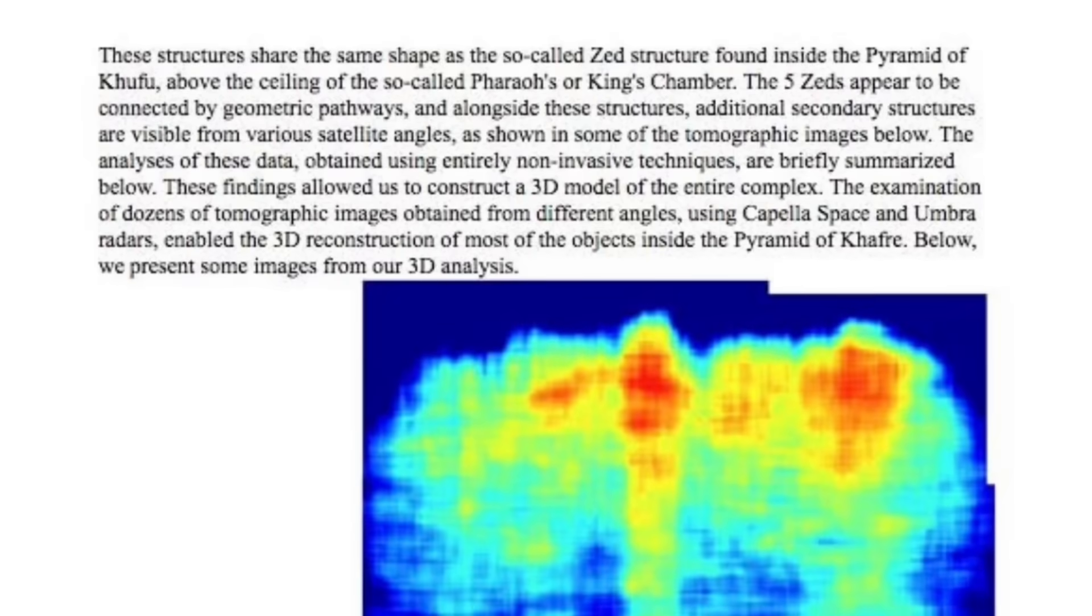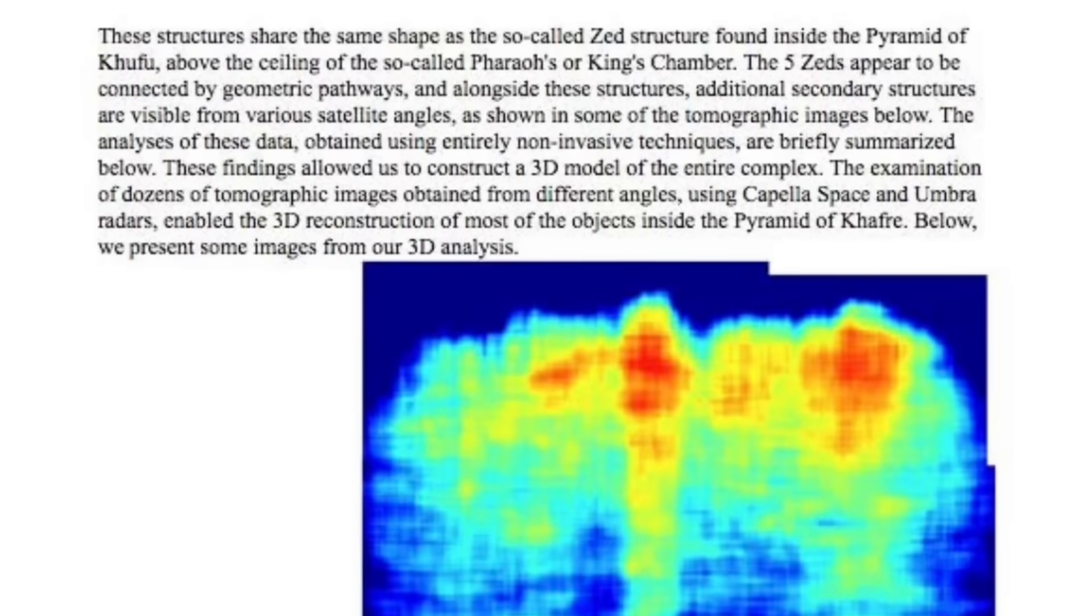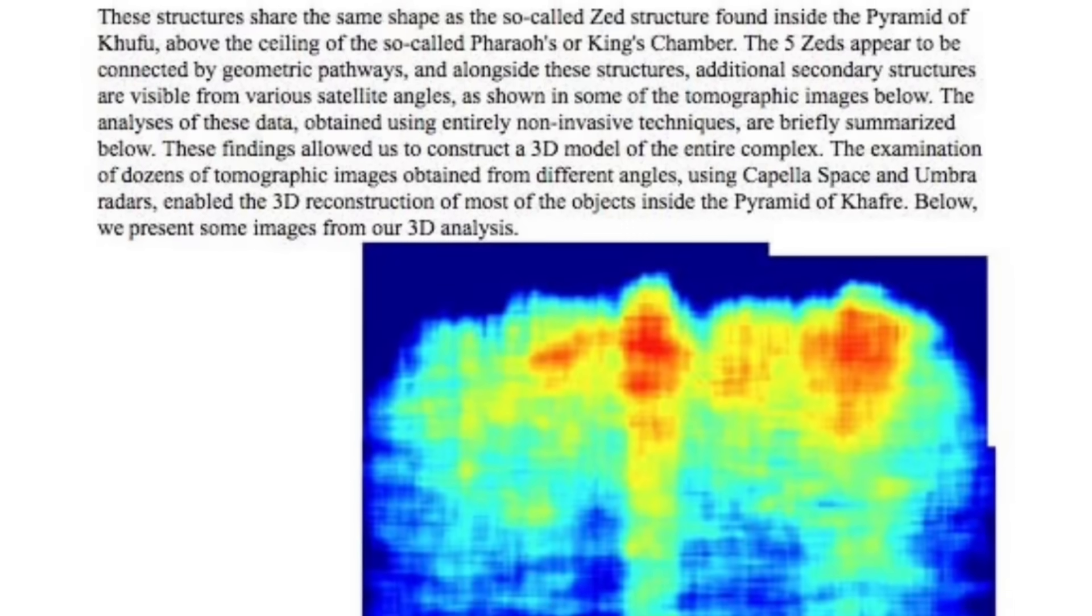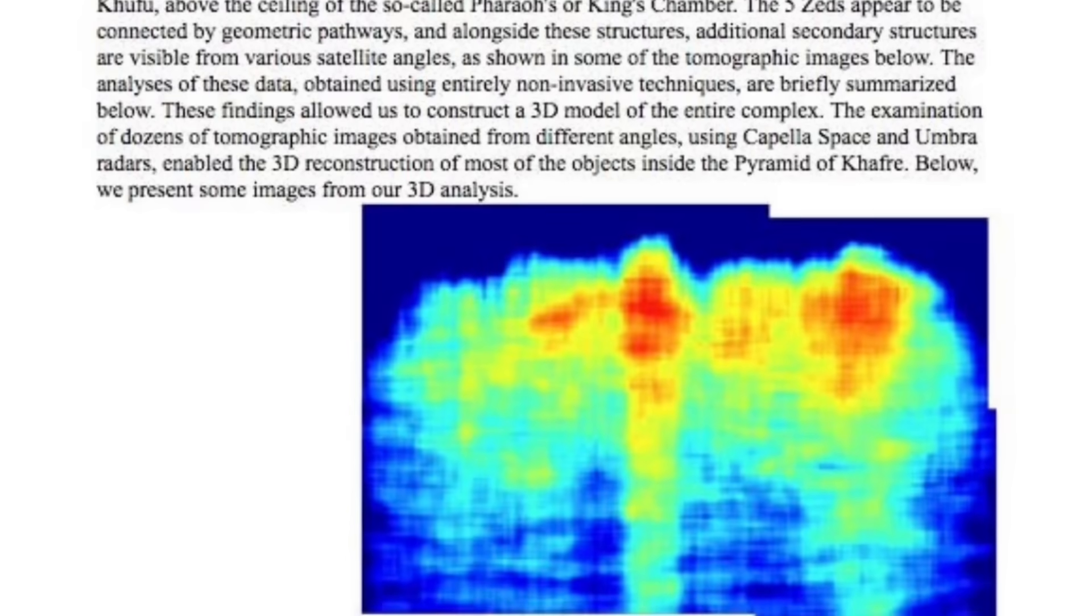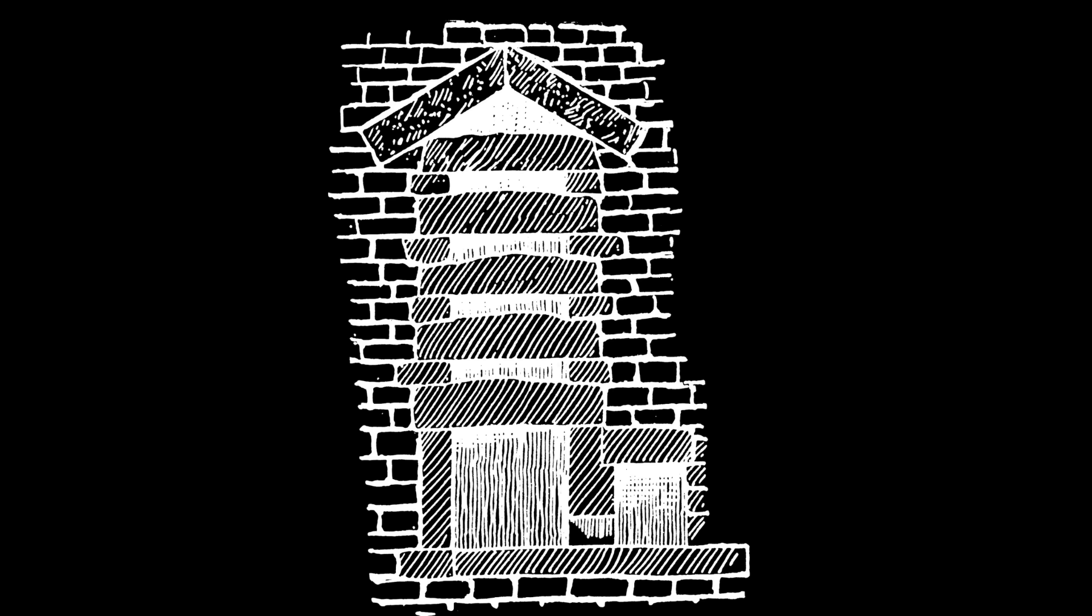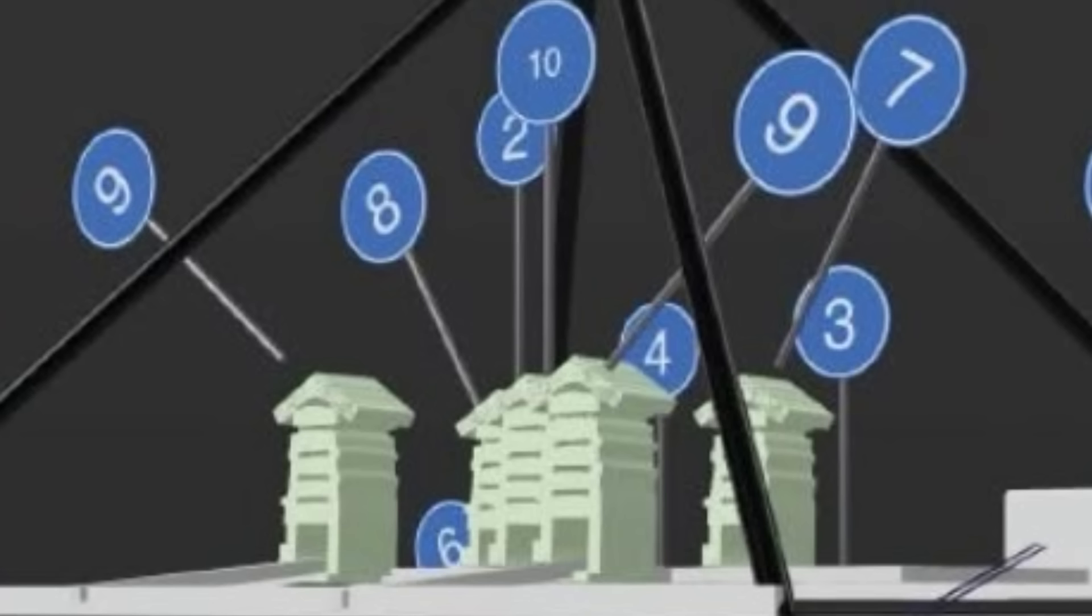The abstract paper then goes on to say that these structures share the same shape as the so-called Z structure found inside the pyramid of Khufu, above the ceiling of the so-called pharaoh's or king's chamber.